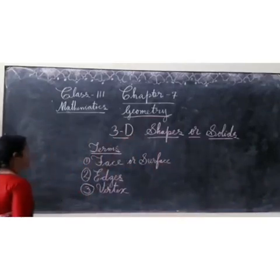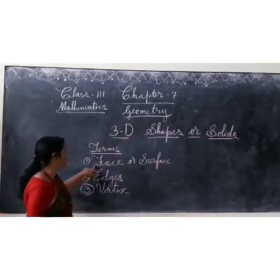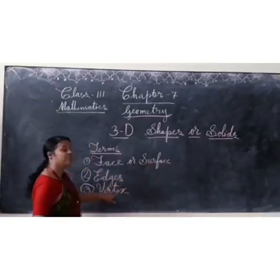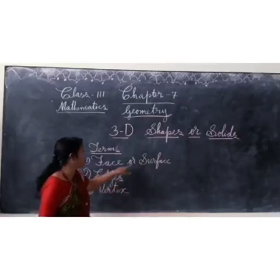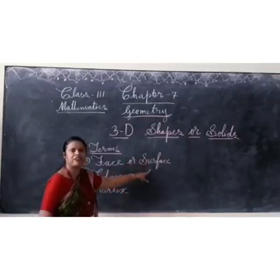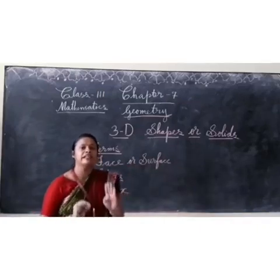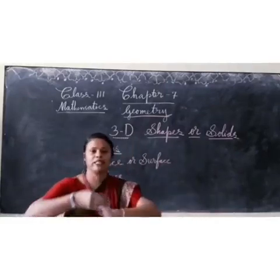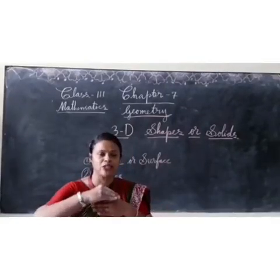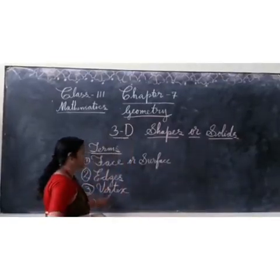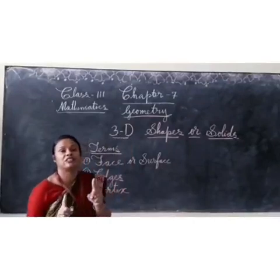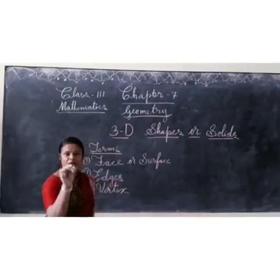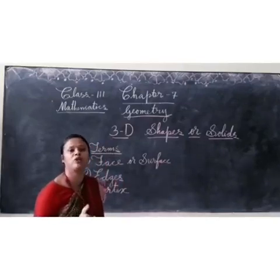Now let us go to another point. A 3D shape has got faces or surfaces, edges, and vertices. Face or surface means the place where we can see or touch. Edges means where two surfaces join. And vertices is where two edges join.